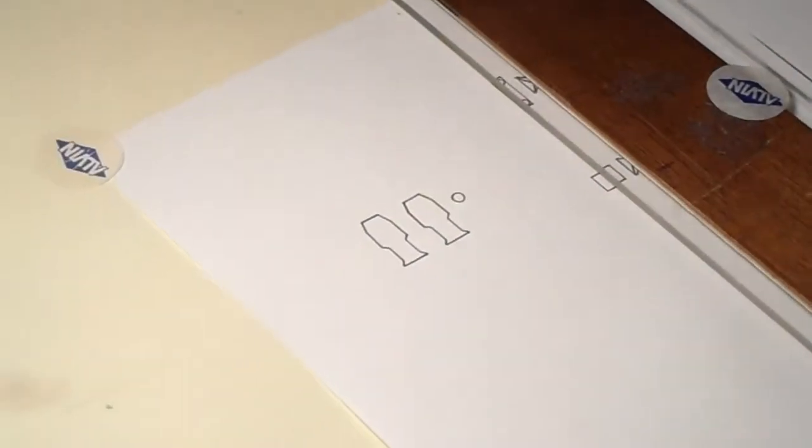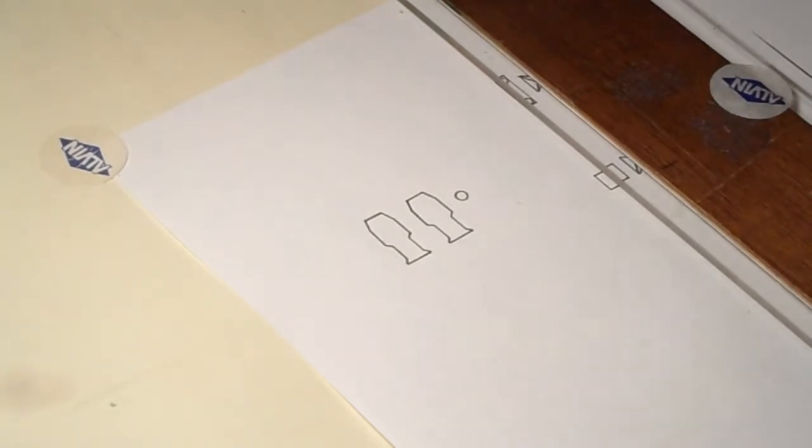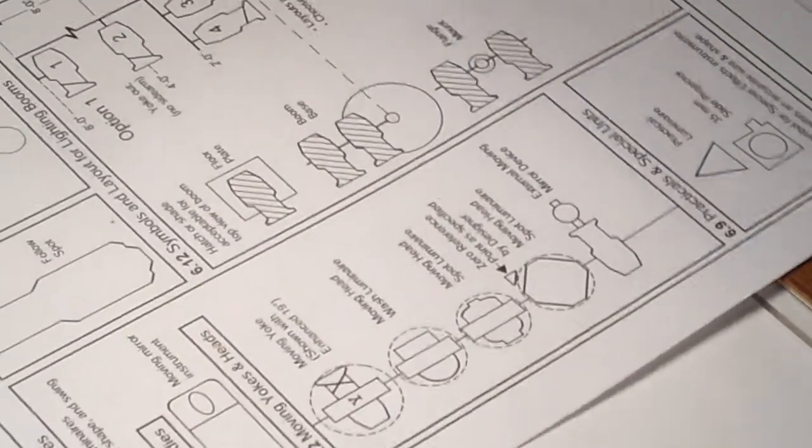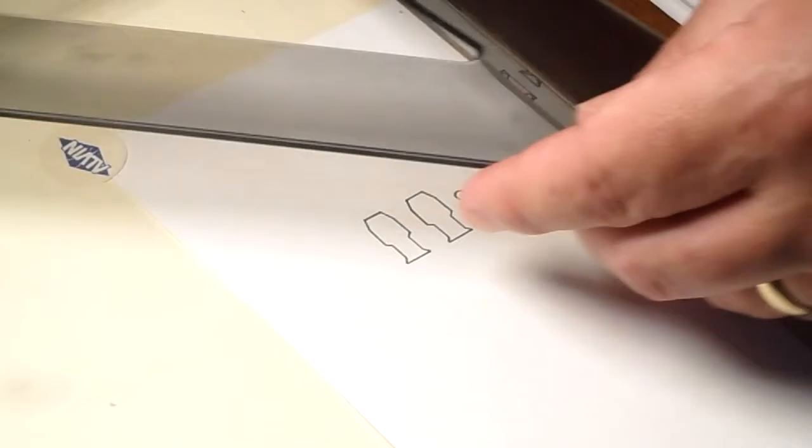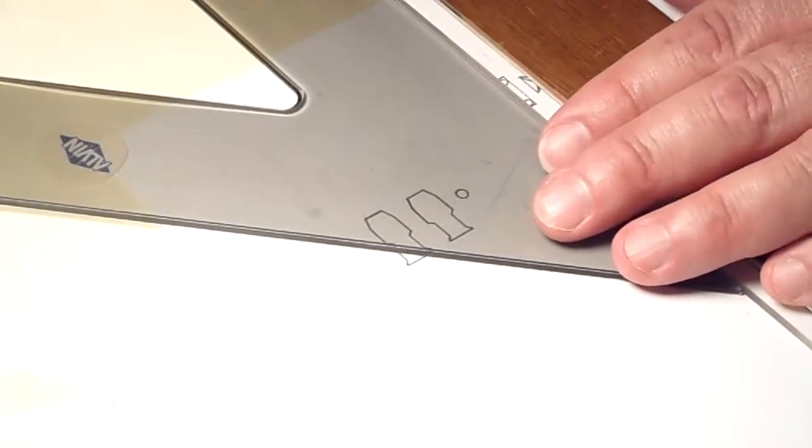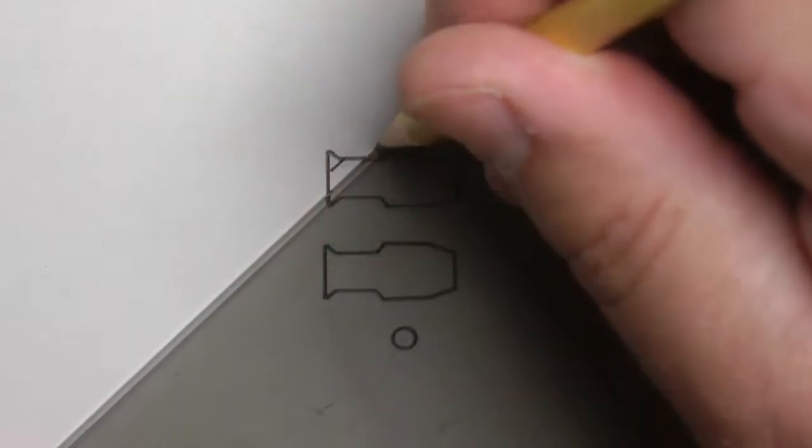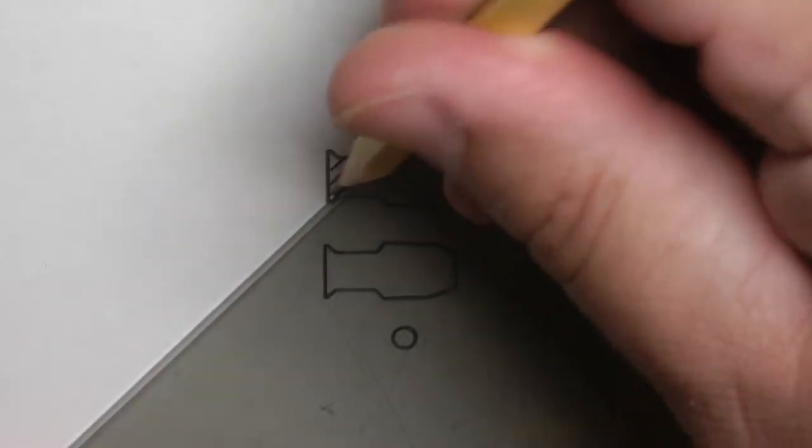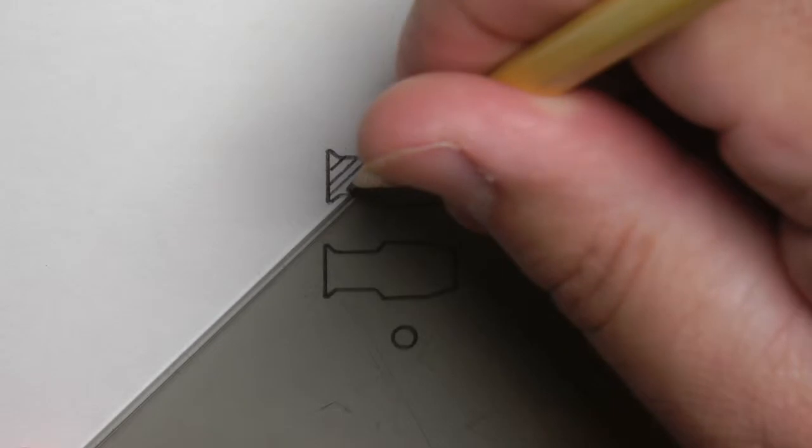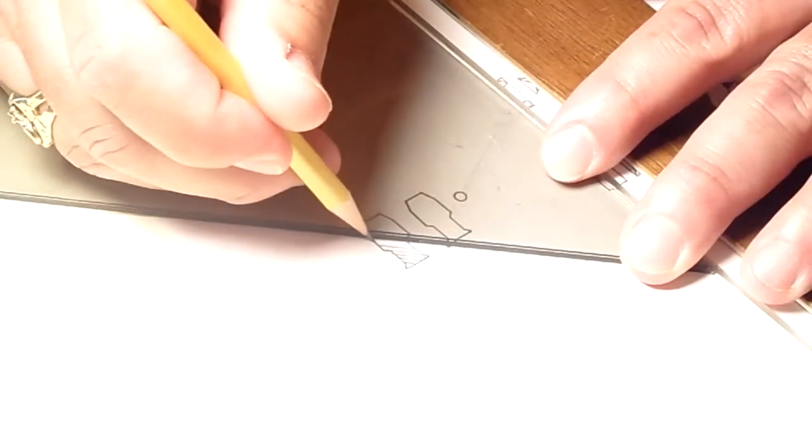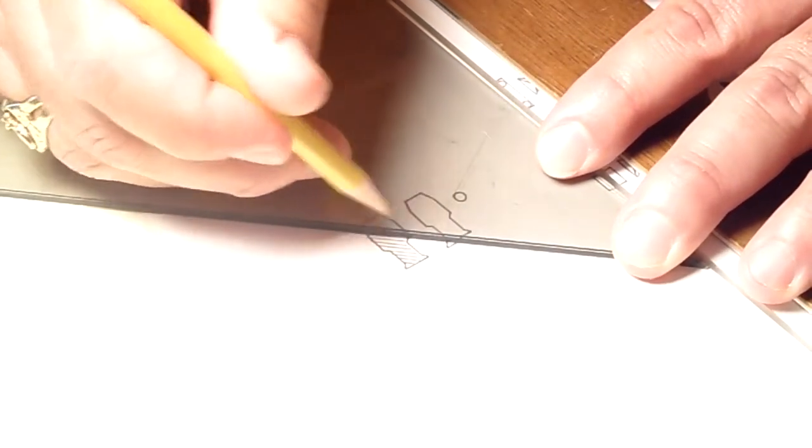The next thing I want to do is take my triangle and put in the crosshatches. In this case, they look like they're about 45 degrees, so I'm going to use my 45 degree triangle and a new sharp pencil because the crosshatches want to be thinner than the outside line.